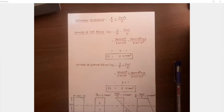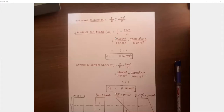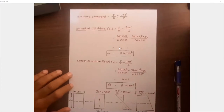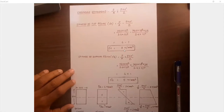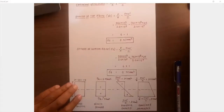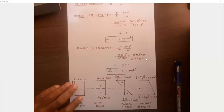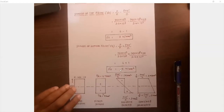The stress formula is: σ = P/A ± P·e'/Z. Since the C line is below the central axis, tension is at the top and compression at the bottom. Stress at top fiber: σ_T = P/A − P·e'/Z = 3 N/mm². Stress at bottom fiber: σ_B = P/A + P·e'/Z = 5 N/mm².